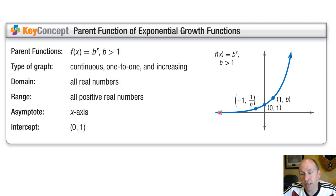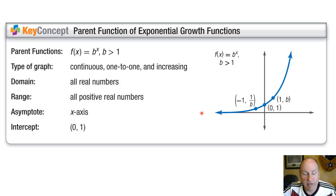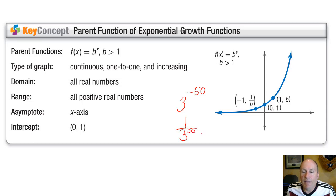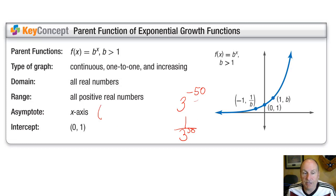The asymptote of the parent function is the line y = 0, also known as the x-axis, because the function never actually reaches 0. For example, 3 to the minus 50 can be written as 1 over 3 to the 50, which is a very, very small number but not 0. No matter how large in the negative direction x gets, the function will approach but never reach 0. The y-intercept is the point (0, 1).